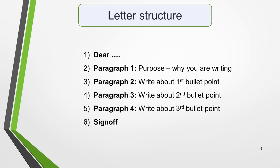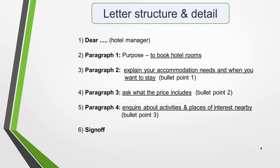All you need to do to create your plan is to add the details from the question, like this. The person we're writing to is the hotel manager, so that's who we'll address in our greeting. Paragraph 1 is the reason or purpose for writing, which is to book a hotel recommended to you. Paragraph 2 will be about the first bullet point — to explain what accommodation you require and when you want to stay. Paragraph 3 will be about the second bullet point, where we'll ask what will be included in the price. And paragraph 4 will be the third bullet point, where we'll enquire about activities and places of interest near the hotel. And finally, we'll sign off the letter.